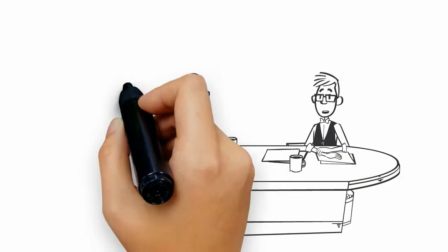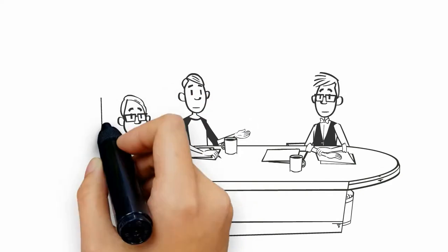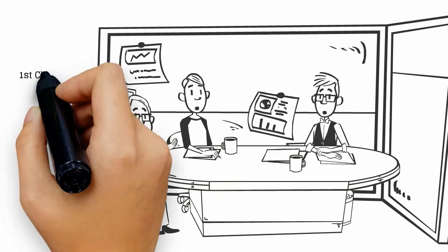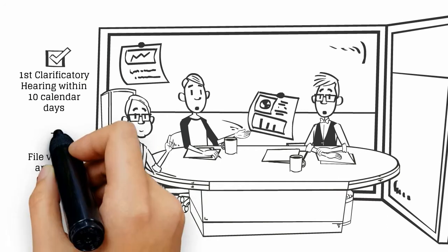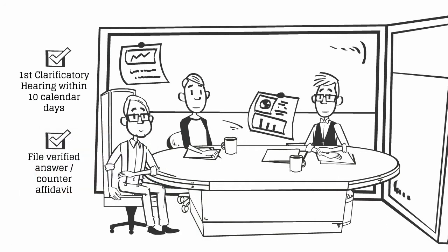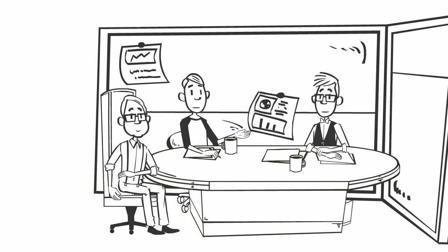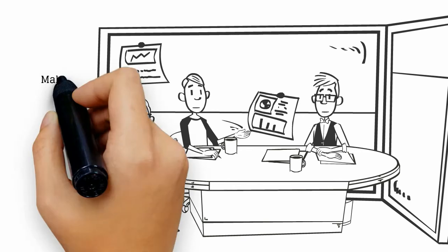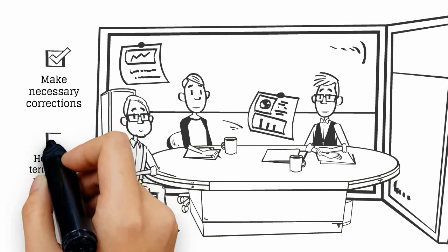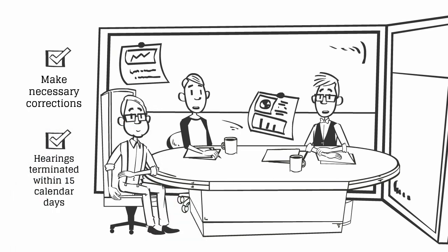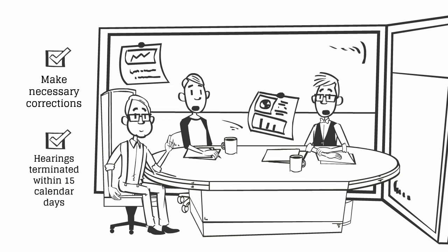A clarificatory hearing may be conducted by the DOLE Regional Director or his representative within 10 calendar days within which to file a verified answer or counter-affidavit. The contractor shall make corrections on the violations that are immediately rectifiable within the period. The hearings shall be terminated within 15 calendar days from the first clarificatory hearing.